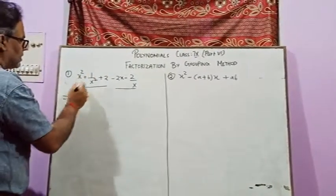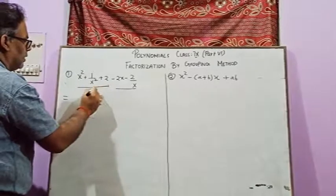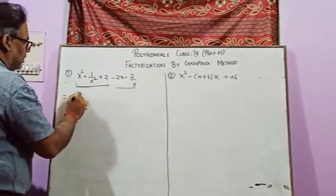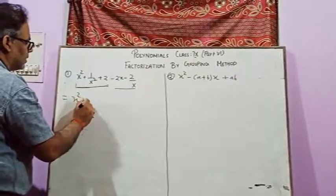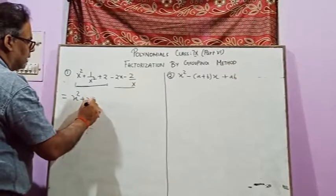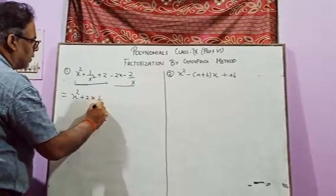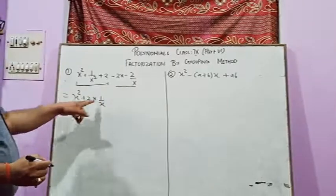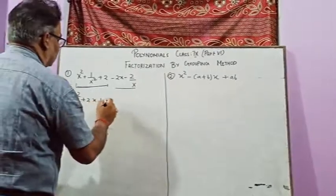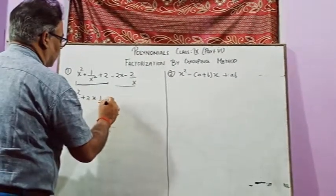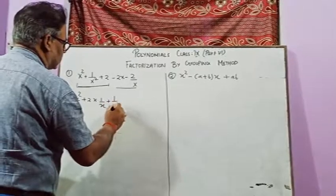It means that this portion, these terms, you may write by this way: x squared plus two into x into one upon x. If you cancel out, it does not take much. And here you can write one upon x squared.